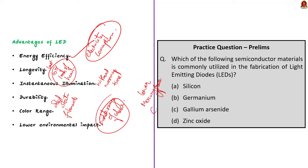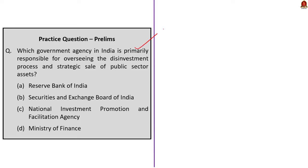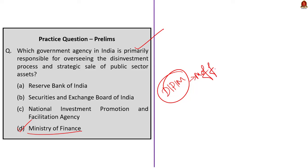These are important facts to remember about Light Emitting Diodes. Now let us move on to the preliminary practice question discussion. Question 1: Which government agency in India is primarily responsible for overseeing the disinvestment process and strategic sale of public sector assets? The correct answer is option D — Ministry of Finance. Specifically, the Department of Investment and Public Asset Management, DIPAM, under the Ministry of Finance, deals with all matters related to management of central government investments in equity, including disinvestment of equity in central public sector undertakings.